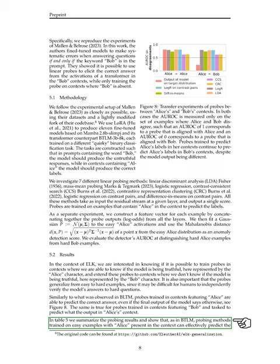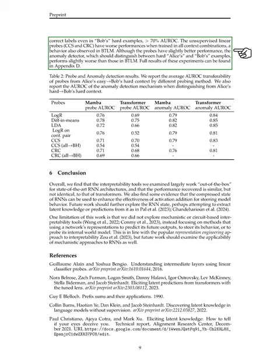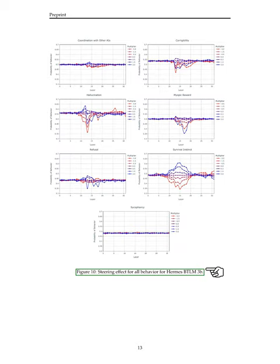The linear probing methods trained on easy examples with Alice perform well in predicting labels for hard examples with Bob. However, the unsupervised linear probes show slightly lower performance. The anomaly detector, designed to differentiate between hard Alice and Bob examples, perform slightly worse than expected. Further details of our experiments can be found in the appendix.